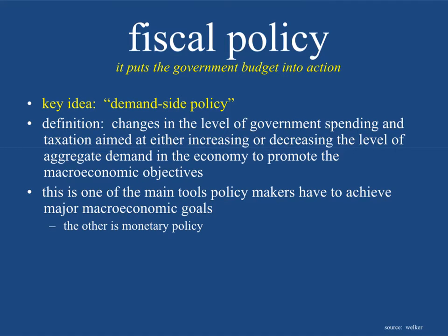So fiscal policy puts the government budget into action. The government has this money — how do they get the money, and how do they spend it? Think about this as a demand-side policy. Fiscal and monetary policy are really difficult to get your mind around because they're used in all macroeconomic contexts to achieve all of the macroeconomic goals. In every chapter of macroeconomics there has been fiscal and monetary policy, and sometimes it's called demand-side policy, sometimes supply-side policy.